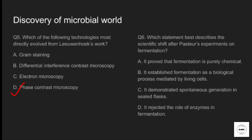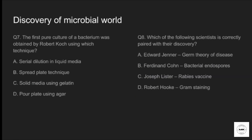Question number six: which statement best describes the scientific shift after Pasteur's experiment on fermentation? Option A: it proved that fermentation is purely chemical. Option B: it established fermentation as a biological process mediated by living cells. Option C: it demonstrated spontaneous generation in a sealed flask. Option D: it rejected the role of enzymes in fermentation. The correct answer is option B. Pasteur's studies showed fermentation is a biological process caused by living microorganisms and is not purely chemical.